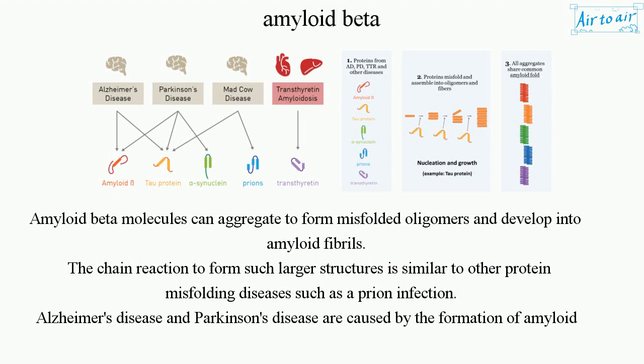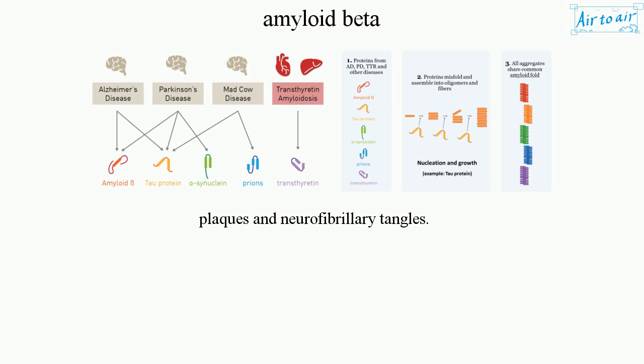Amyloid beta molecules can aggregate to form misfolded oligomers and develop into amyloid fibrils. The chain reaction to form such larger structures is similar to other protein misfolding diseases. Diseases such as prion infection, Alzheimer's disease, and Parkinson's disease are caused by the formation of amyloid plaques and neurofibrillary tangles.